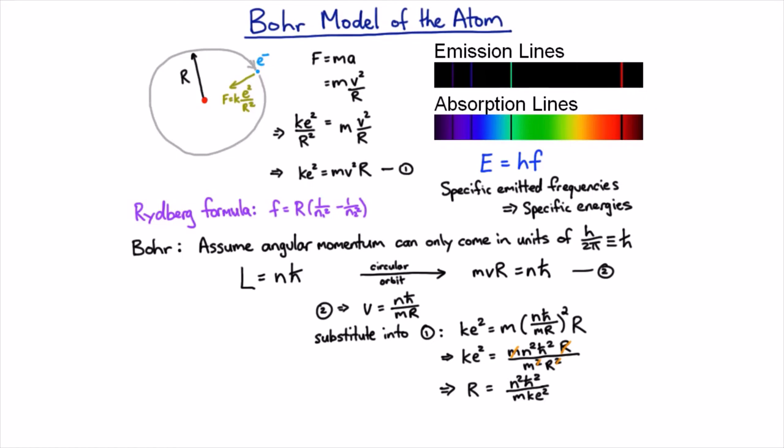So the radius gets bigger in discrete amounts as n gets larger. The very smallest it can be is when n equals one, and so then the radius would be h-bar squared on mke squared. And that's called the Bohr radius.